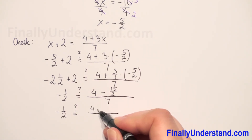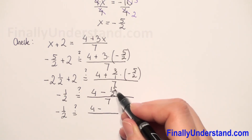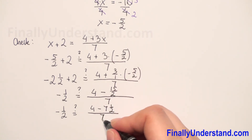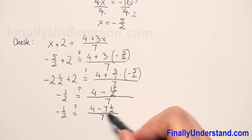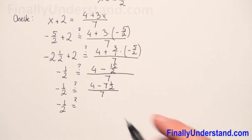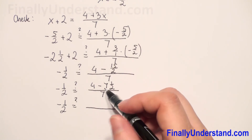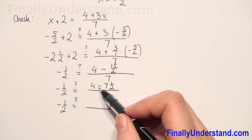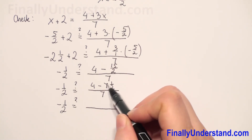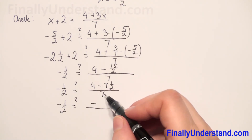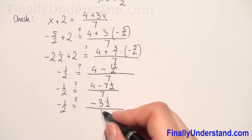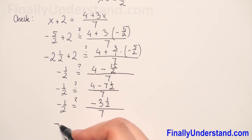So in the numerator we now have 4 minus 15 over 2. We can change this improper fraction to a mixed number: it will be 7 and 1 half, over 7. So we have negative 1 half on the left. On the right, in the numerator we have 4 minus 7 and 1 half, so 7 minus 4 is 3, and we keep the sign of the largest number — which is negative — giving us negative 1 half.